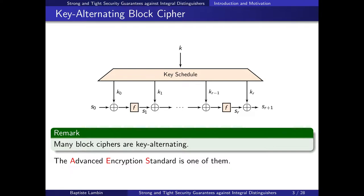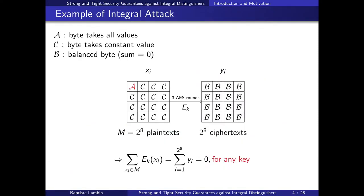One example is AES. We want to study the security of these block ciphers — how far they differ from a random set of permutations — and one example is integral attacks. I will introduce them with a well-known example on AES. We generate a set M of 2^8 plaintexts with the following structure: each byte of the plaintext is set to some constant, except one byte (the first one), which takes all possible values.